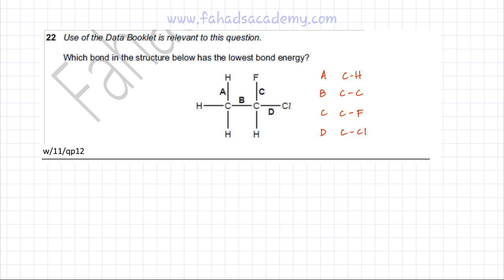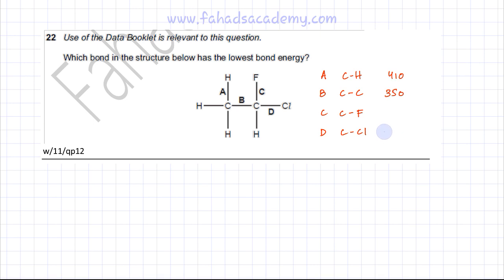The use of the data booklet is relevant to this question. The C-H bond energy is given as 410 kJ/mol. The C single bond C bond energy is given as 350 kJ/mol. Then the C-Cl bond energy is given as 340 kJ/mol. What's missing in the data booklet is the C-F bond energy.